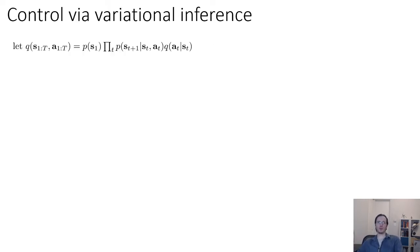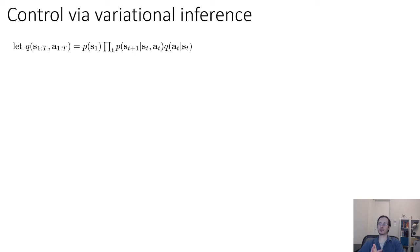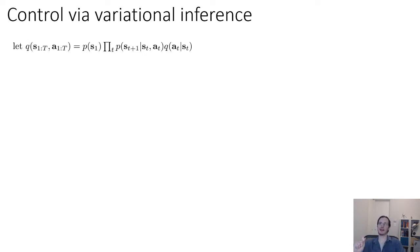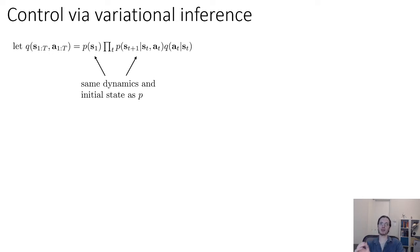To perform control using variational inference, we define a particular distribution class for Q. We define Q(S_1 through T, A_1 through T) as the product of P(S_1), the transition probabilities P(S_{t+1} | S_t, A_t) at every time step, and an action distribution Q(A_t | S_t). This is peculiar because typically in variational inference we learn the entire variational distribution, but here we fix the dynamics and initial state to be the same as P and only learn the action conditional Q(A_t | S_t).